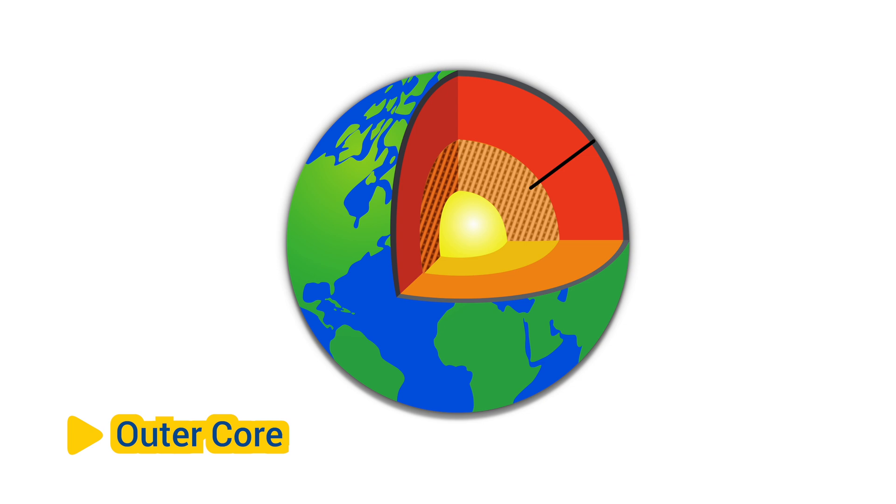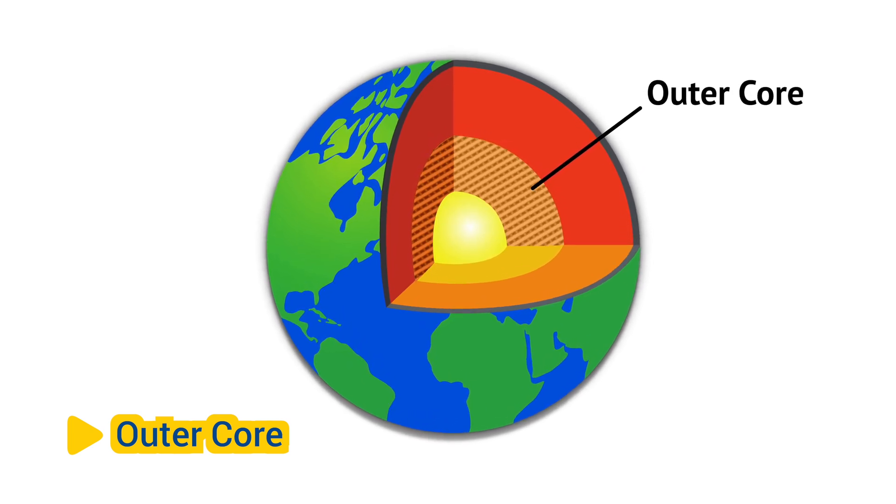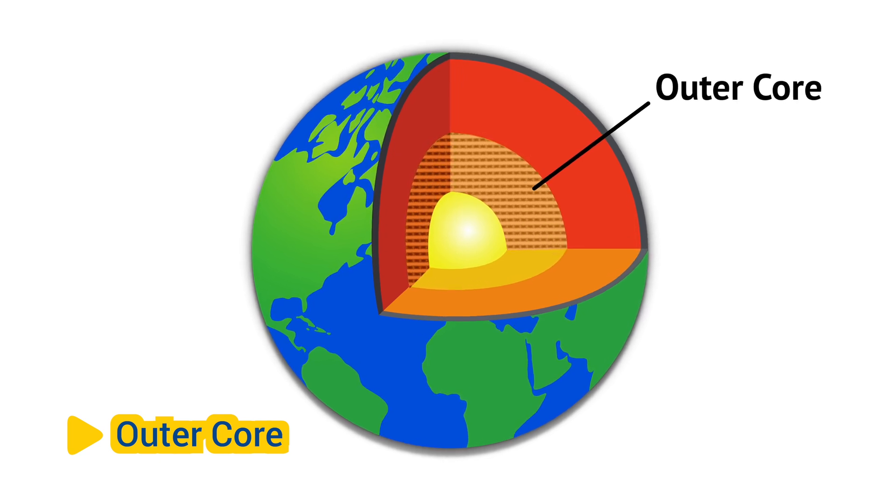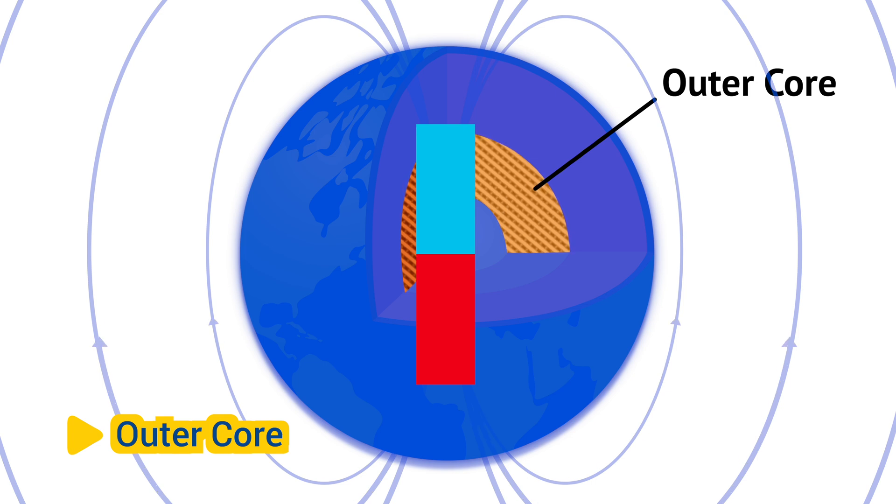Outer Core: The outer core is a layer of molten metal, primarily iron and nickel, that surrounds the solid inner core. The outer core is responsible for generating Earth's magnetic field through the movement of electrically conducting fluids, a process known as the dynamo effect.